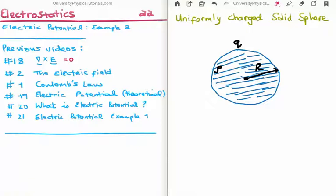In video 18 I discussed the curl of the electric field, and we found that the curl of the electrostatic field was equal to 0, but it was non-zero when we were talking about electrodynamics. In video 2 I discussed the electric field, and in video 1 I discussed Coulomb's law.